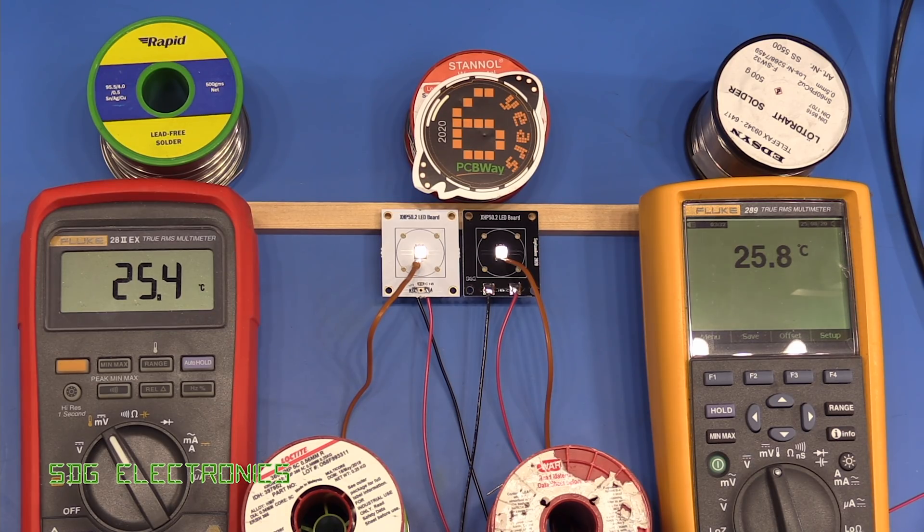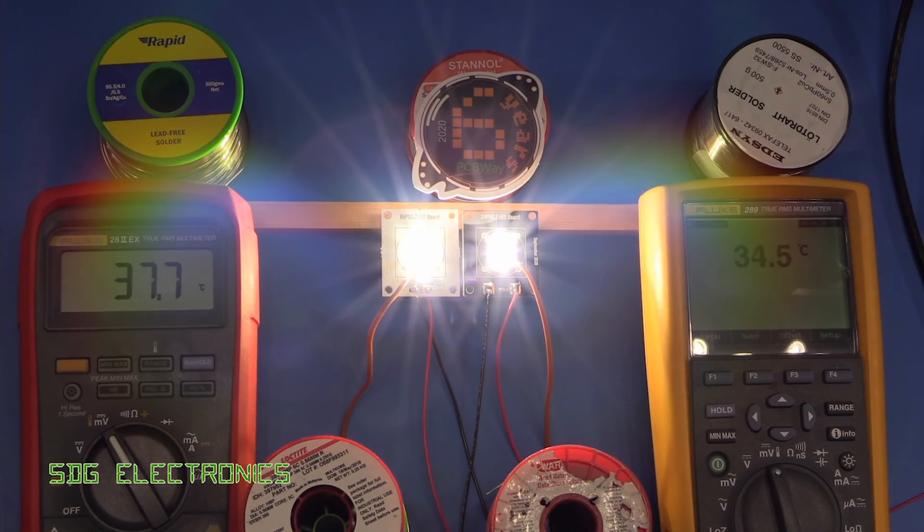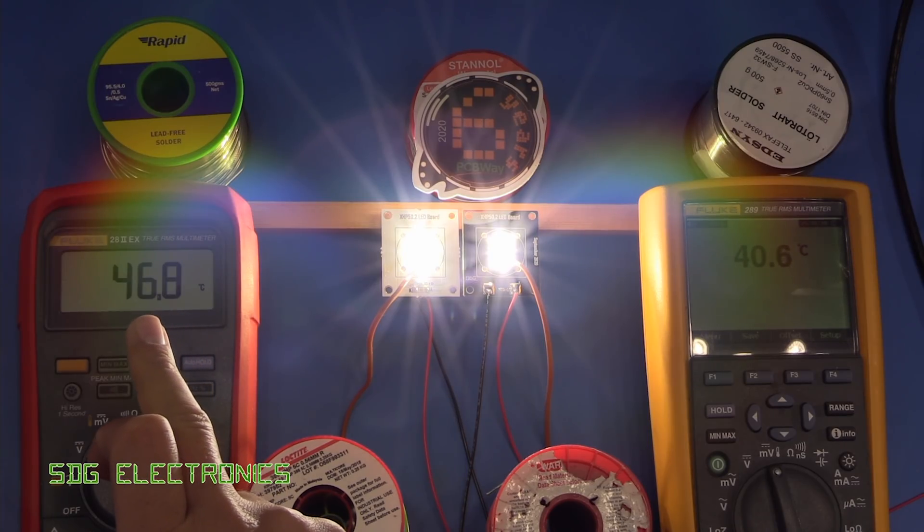But now what we're going to do is increase the current right up to one amp, and we should see these temperatures starting to climb quite rapidly. So I'll turn it up to one amp now. You can see the PCB on the FR4 material is climbing more quickly. We're at 48 degrees already, and the metal clad PCB tailing behind at 43, 44 degrees C, which is what we expect.